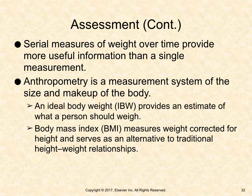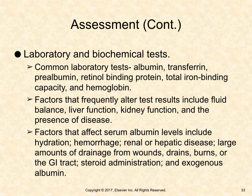Anthropometry is a measurement system of the size and makeup of the body. An ideal body weight provides an estimate of what a person should weigh. Body mass index measures weight corrected for height and serves as an alternative to traditional height-weight relationships. Laboratory and biochemical tests to assist with evaluating nutritional status include albumin, transferrin, prealbumin, retinol-binding protein, total iron-binding capacity, and hemoglobin. Factors that frequently alter test results include fluid balance, liver function, kidney function, and the presence of disease.